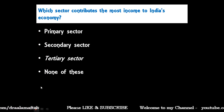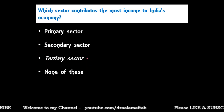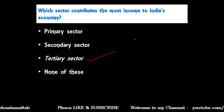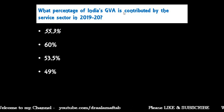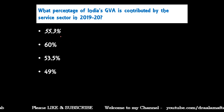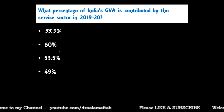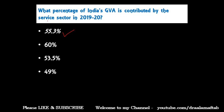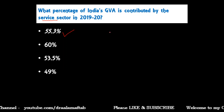Next question: Which sector contributes the most income to India's economy? It is the tertiary sector, or service sector. Following that: What percentage of India's GVA — Gross Value Added — is contributed by the service sector in 2019-20? Options are: 55.3%, 60%, 53.5%, or 49%. The correct answer is 55.3 percent.